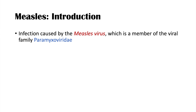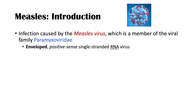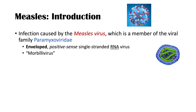Measles is caused by an infection by the measles virus, which is itself a member of the viral family Paramyxoviridae. The measles virus is an enveloped positive-sense single-stranded RNA virus. The measles virus is also known as a morbillivirus, and a morbillivirus is a virus that causes a morbilliform rash, which we'll talk about later on.